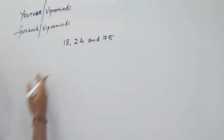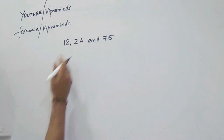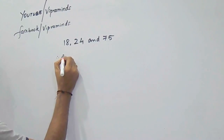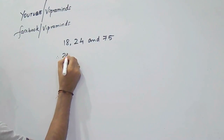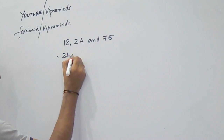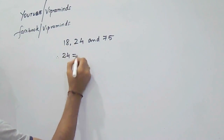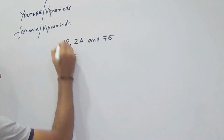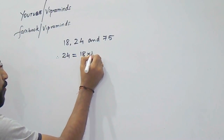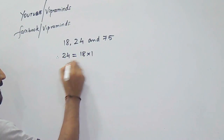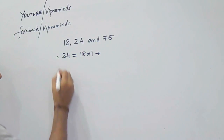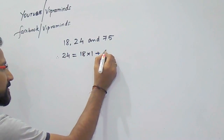First, we will select 18 and 24. Out of these, 24 is greater. So we write: dividend 24, divisor 18. 18 into 1 is 18, so the remainder will be 6.